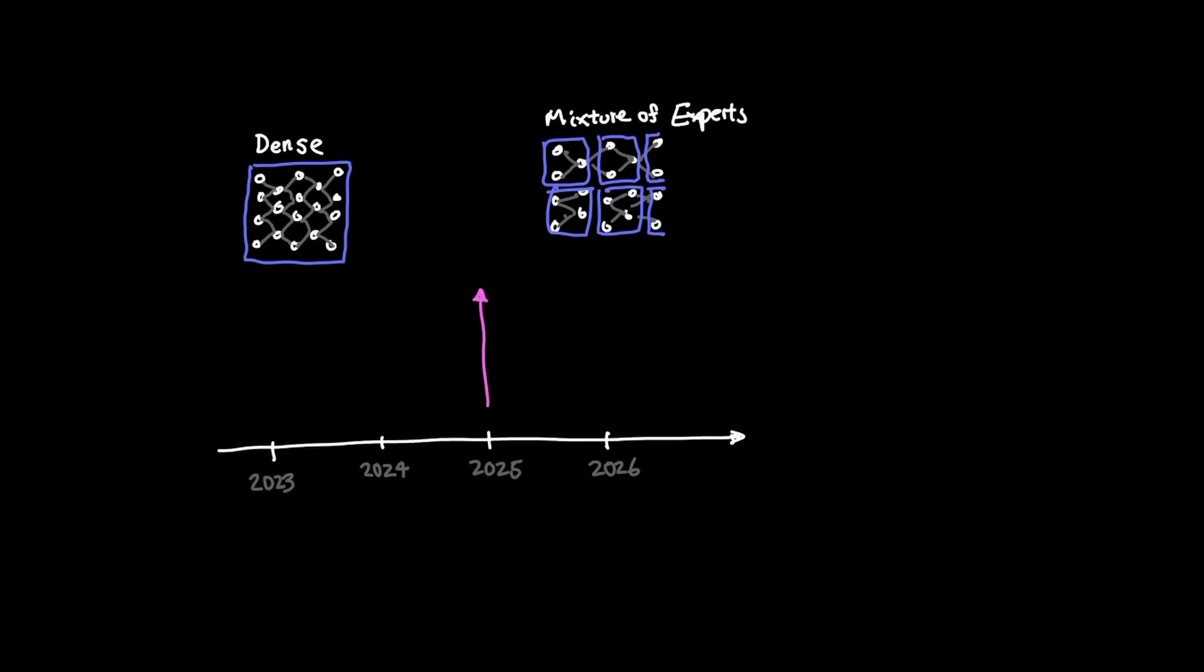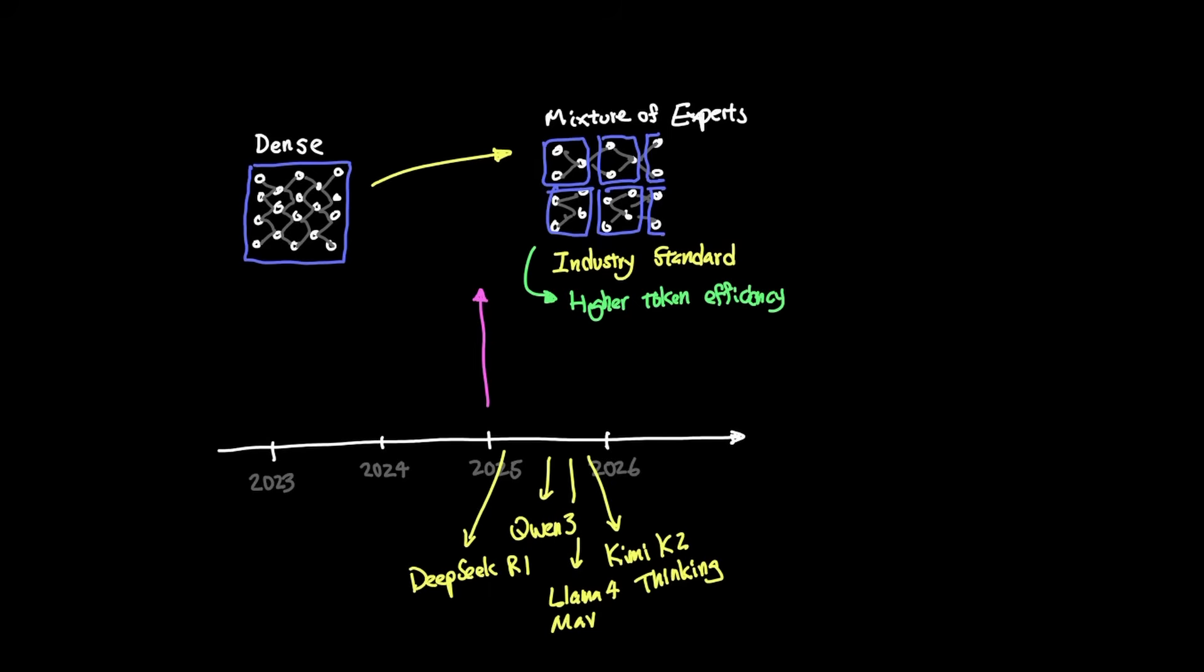For example, 2025 was the year when mixture of expert architecture was really adopted as the industry standard. Notably, Qwen3, DeepSeek R1, Llama4 Maverick, and Kimi K2 Thinking are all examples of mixture of expert models that we saw in 2025. And as much as in theory, a mixture of experts essentially allows higher token efficiency, the underlying graphics cards also need to support this in both training and inference, especially if experts are distributed across GPUs.